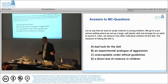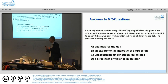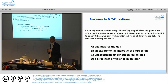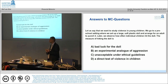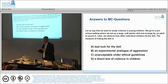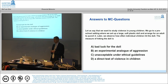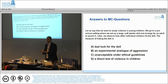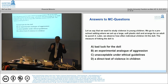The answer is B — an experimental analog of aggression. It's very difficult to study aggression in the laboratory since we obviously cannot make people hurt each other. This is an experimental analog, like the hot sauce paradigm or ice water treatment. We infer that if children hit a doll, they might also hurt other children when they see an adult behaving this way.